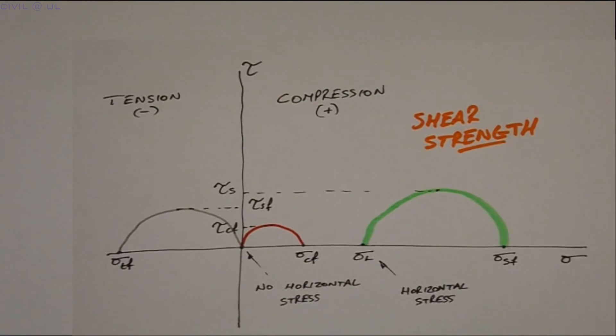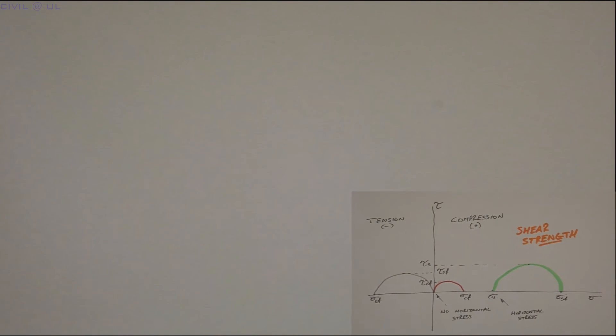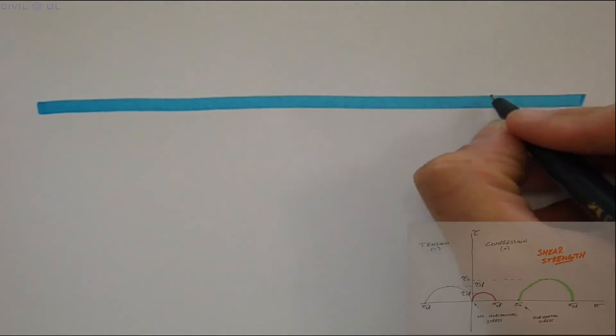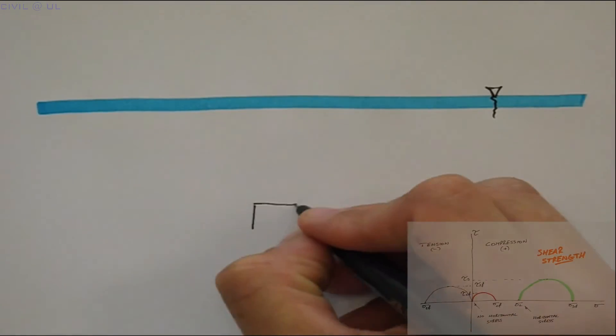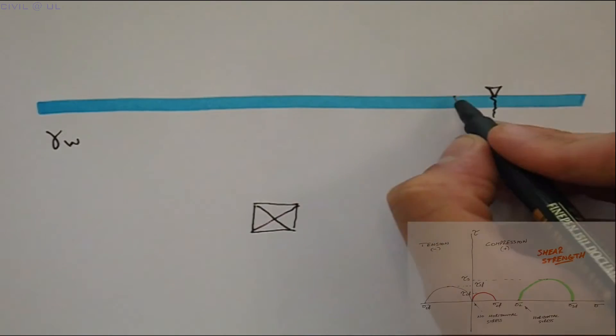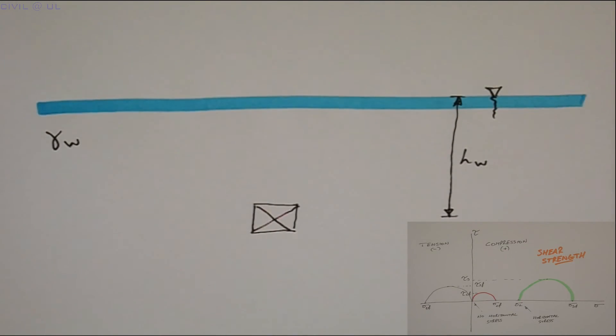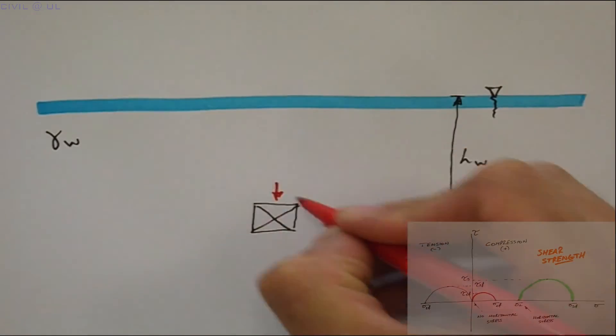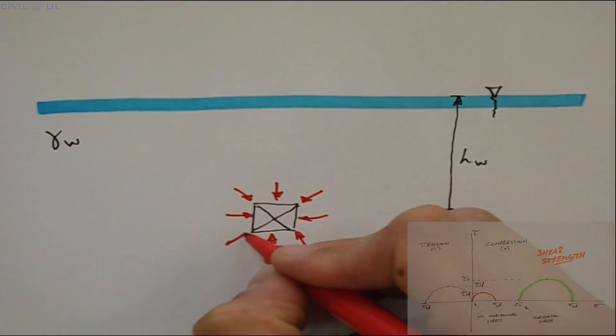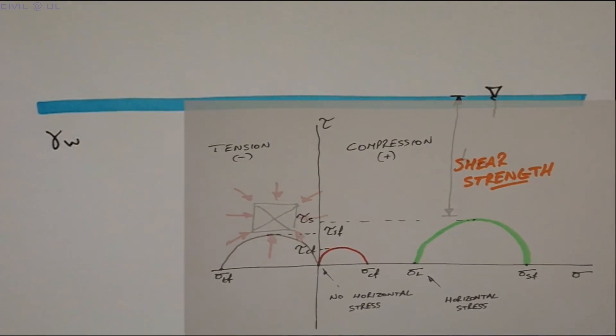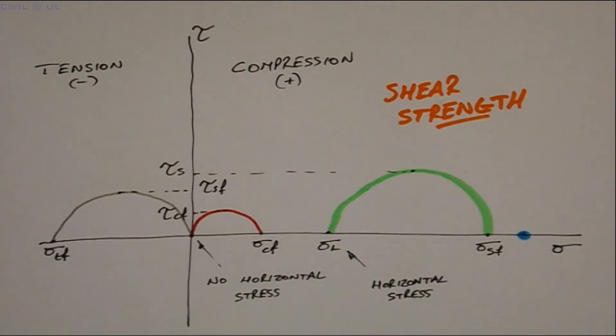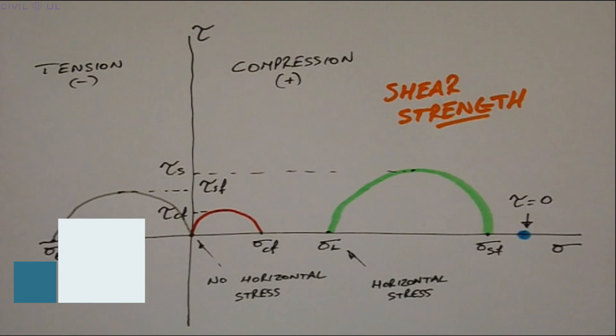Oh, and yes, we said we'd show that stationary water has no shear strength. Well, we know that the pressure at a given depth in water is given by the unit weight of water times the height of water. We also know that this pressure is equal in all directions. So, the Mohr's circle plots as a single point on the normal stress axis, thus registering zero on the shear axis. Therefore, we can conclude that any material that can support its own weight has shear strength.